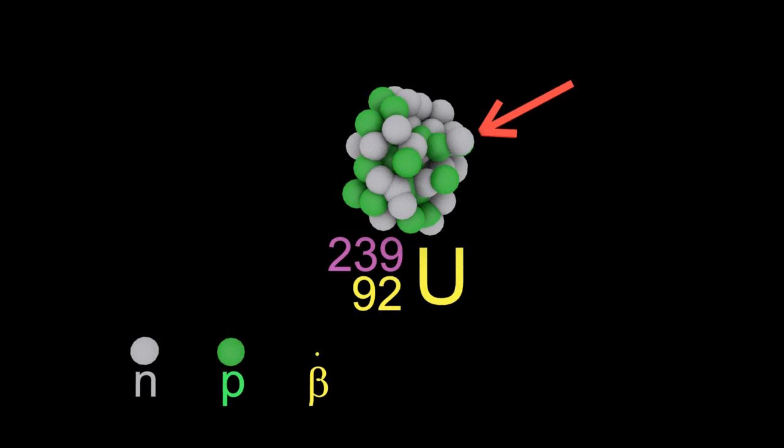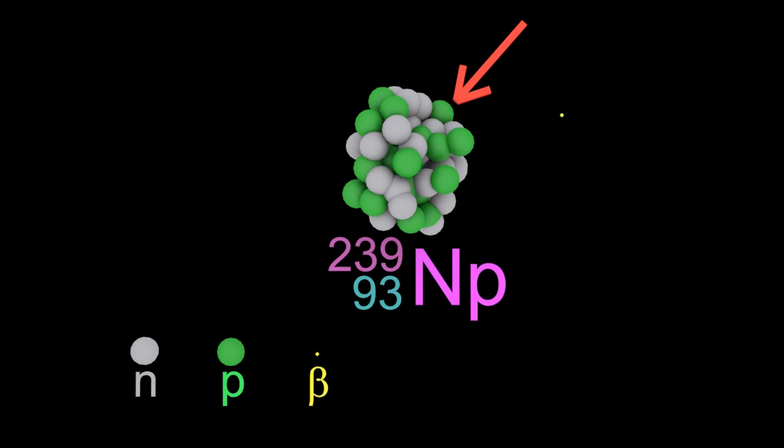And then, keep an eye on this other neutron, it will undergo beta decay, turning a neutron into a proton. You've just made neptunium. Who cares? Well, keep your eye on this other neutron, as that also undergoes beta decay. And now you've made plutonium.